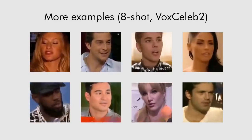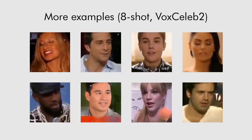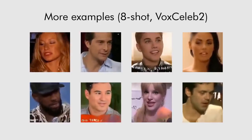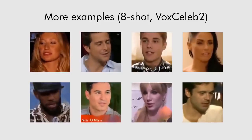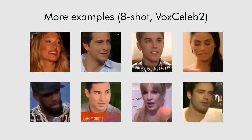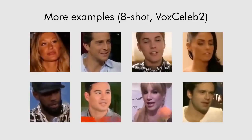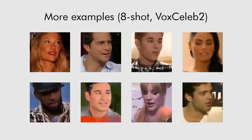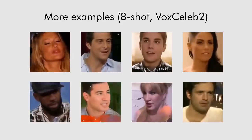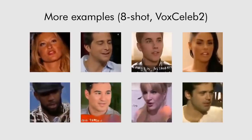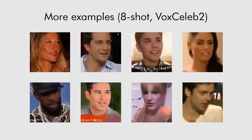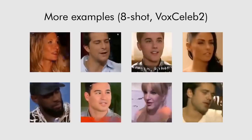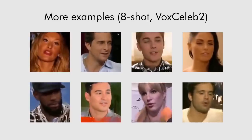Here we show more results for holdout identities on the VoxCeleb2 dataset that were unseen by the system at the meta-learning stage. These talking head models were obtained using eight frames, although in some cases there was limited diversity between the head poses in those eight frames.